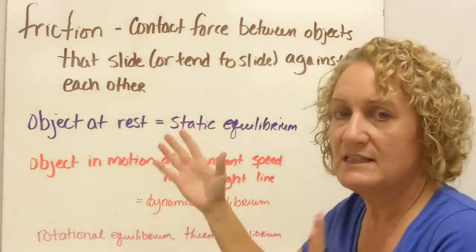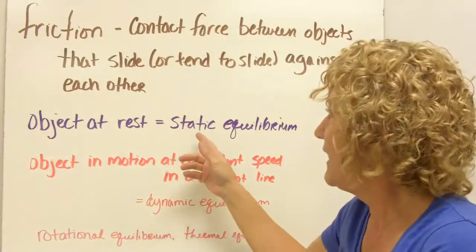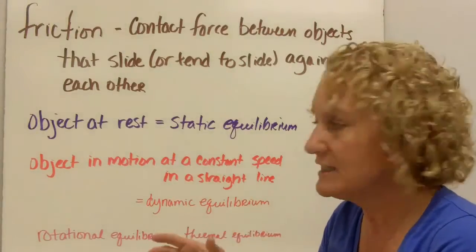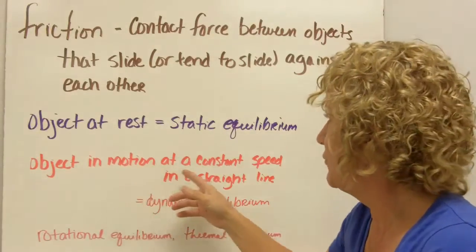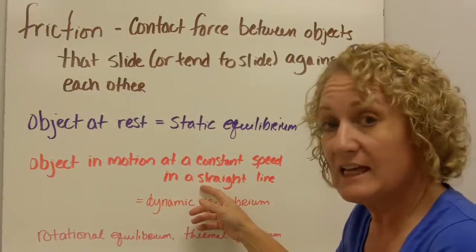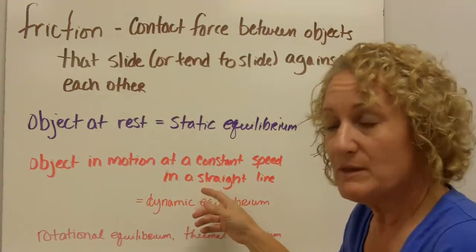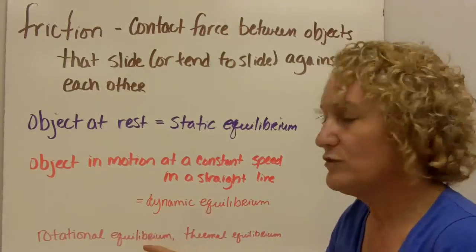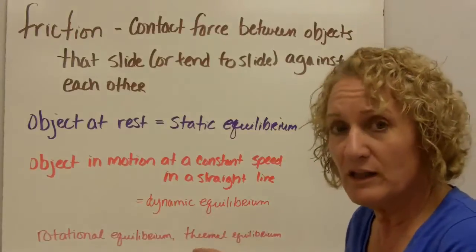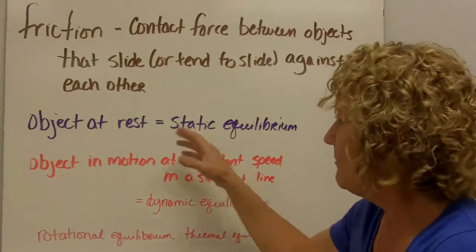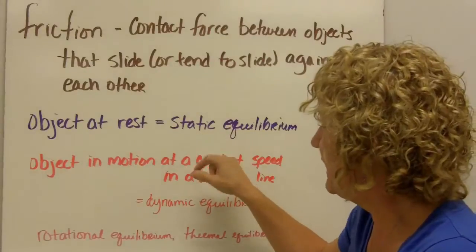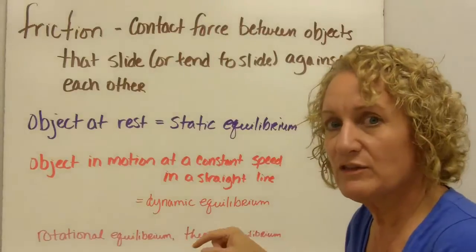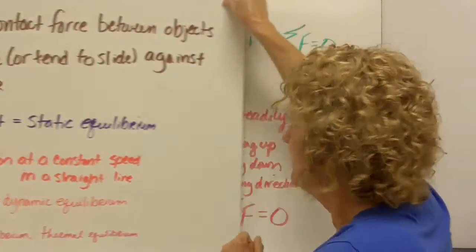Now, if an object is at rest, it's not moving. It's in equilibrium. That's called static equilibrium. Static means unmoving. It means staying still. If an object is in motion at a constant speed and in a straight line, it can still be in equilibrium. But that equilibrium is called dynamic equilibrium. Now, there's other equilibriums. We have rotational equilibrium, thermal equilibrium. We'll talk about all those later. But for today, I want you to know static equilibrium and dynamic equilibrium might be a good idea to write those down in your science notebook, along with the definition.